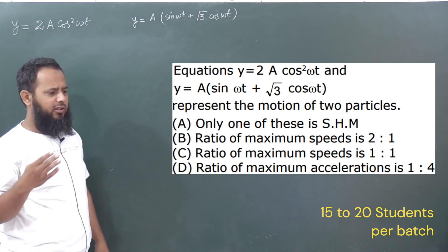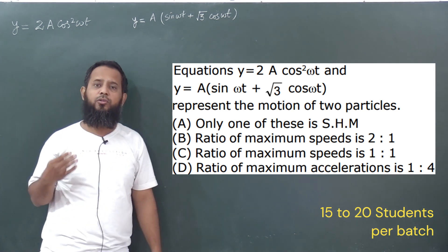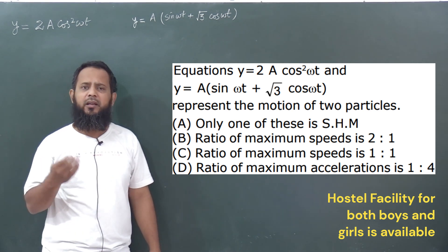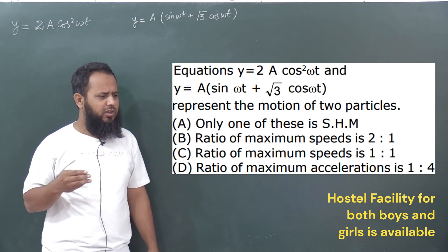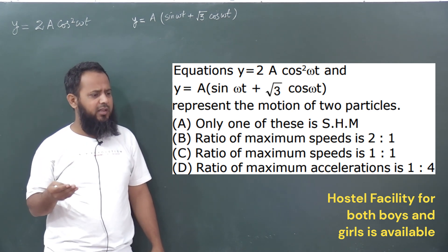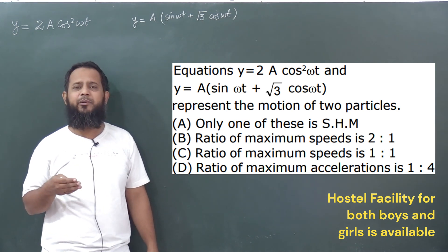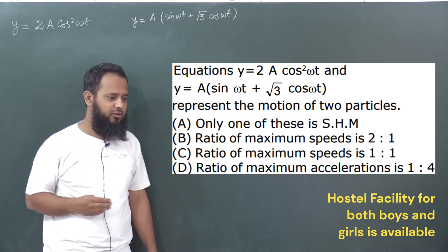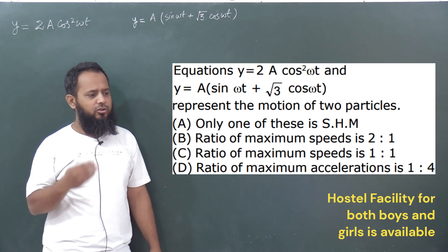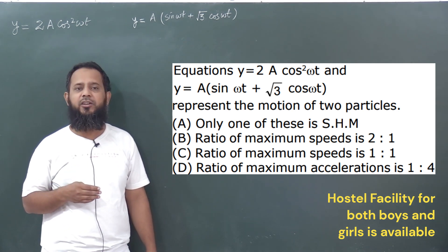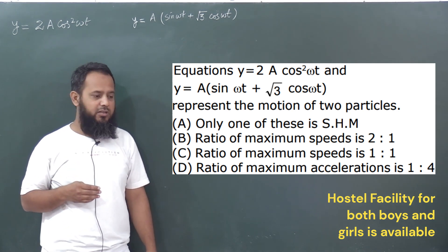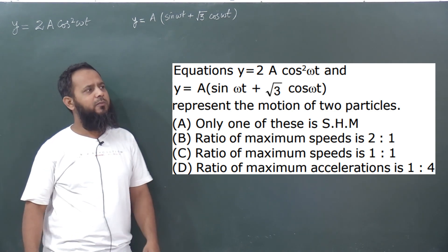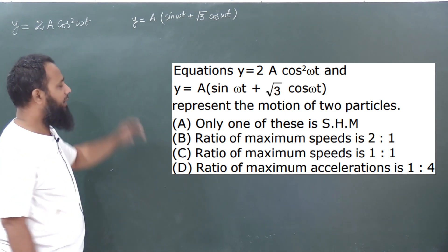हमको यह बताना है कि क्या यह दोनों SHM हैं या नहीं। दूसरा, अगर हैं तो इनकी ratio of maximum speed क्या है — options हैं 2:1 और 1:1। और चौथा option है ratio of maximum acceleration is 1:4। हमें basically इन combinations में से एक select करना है।